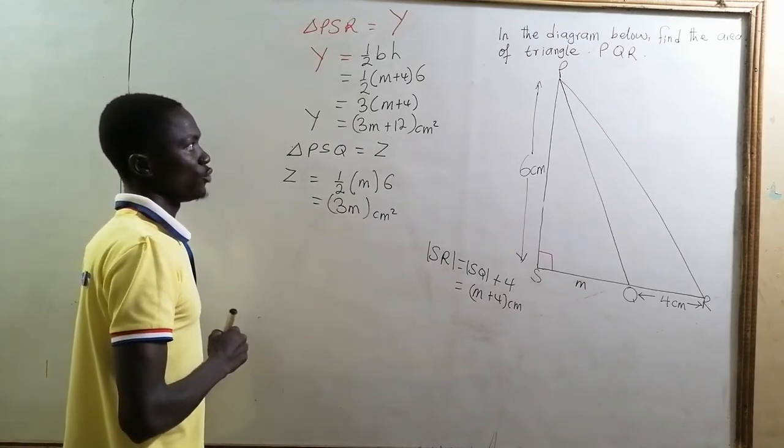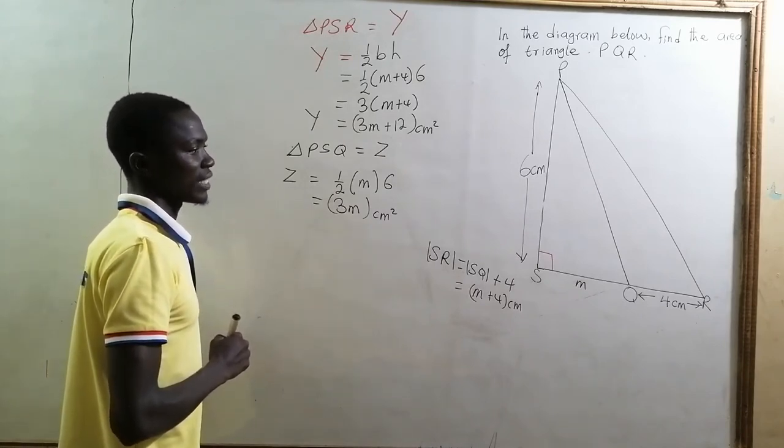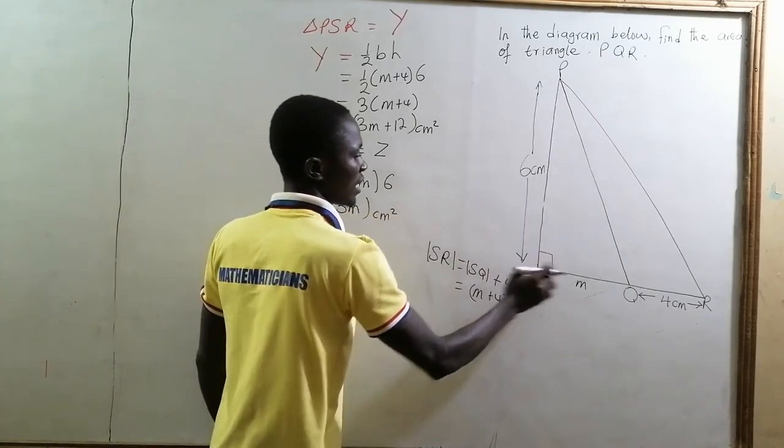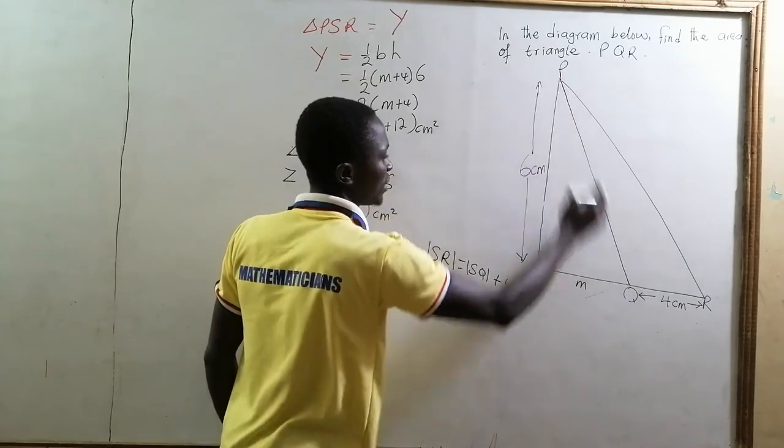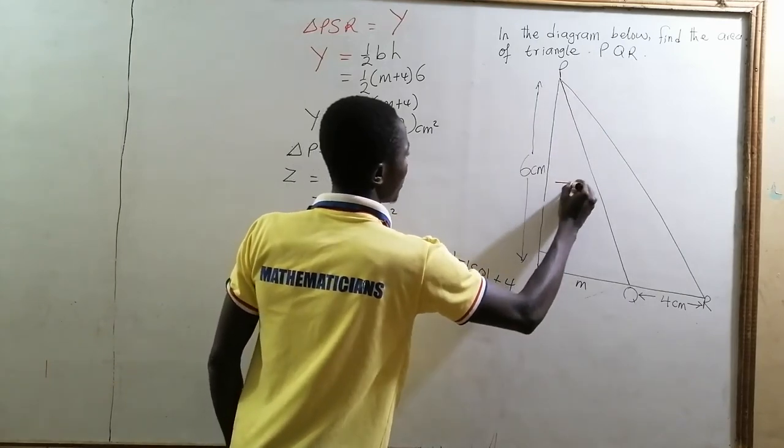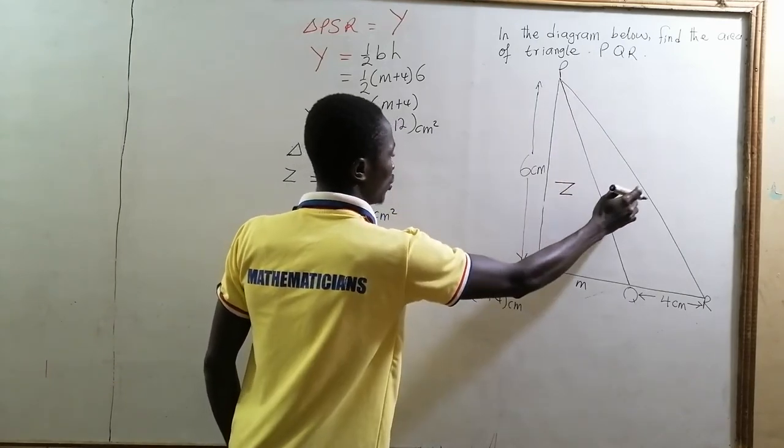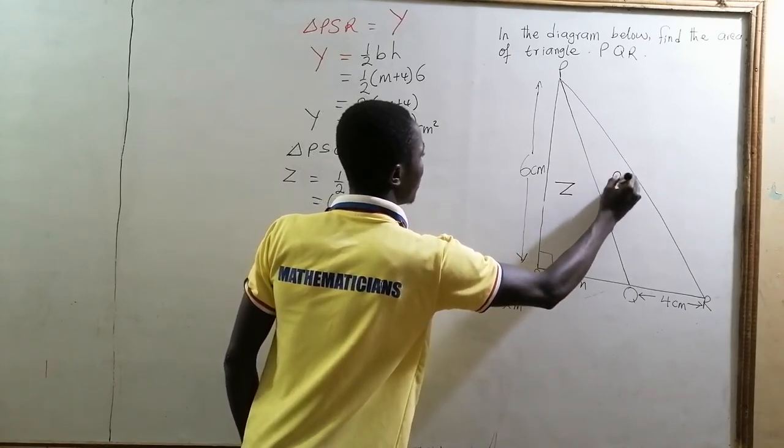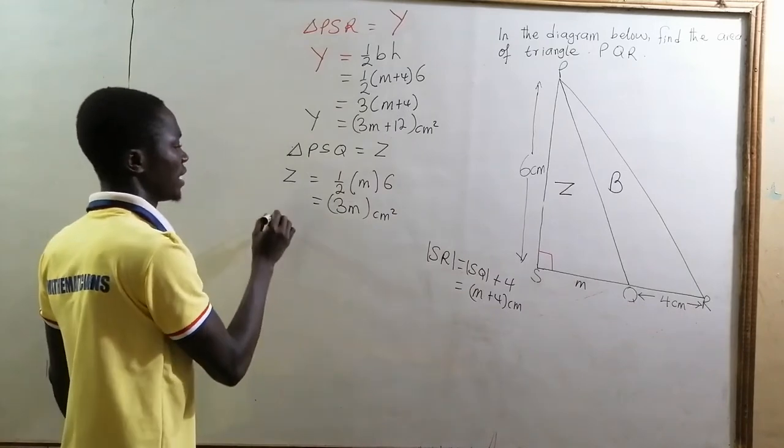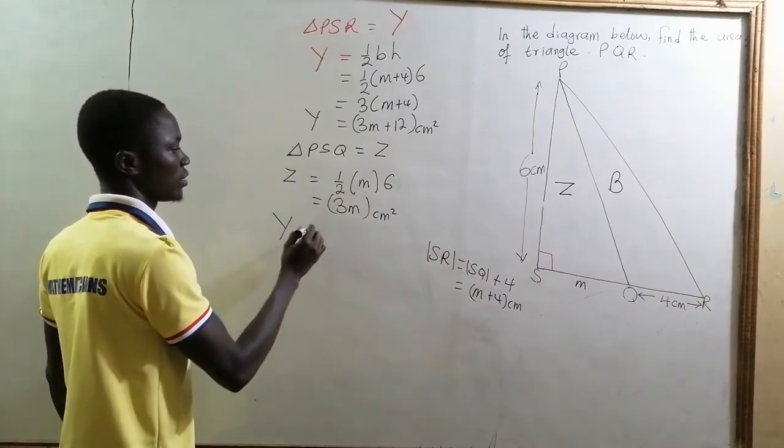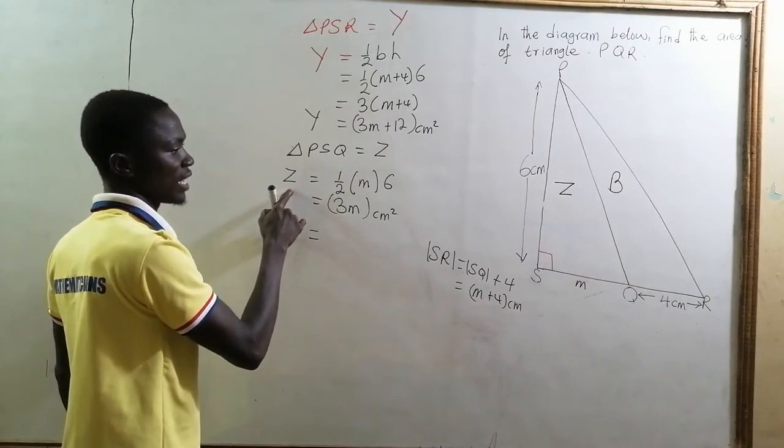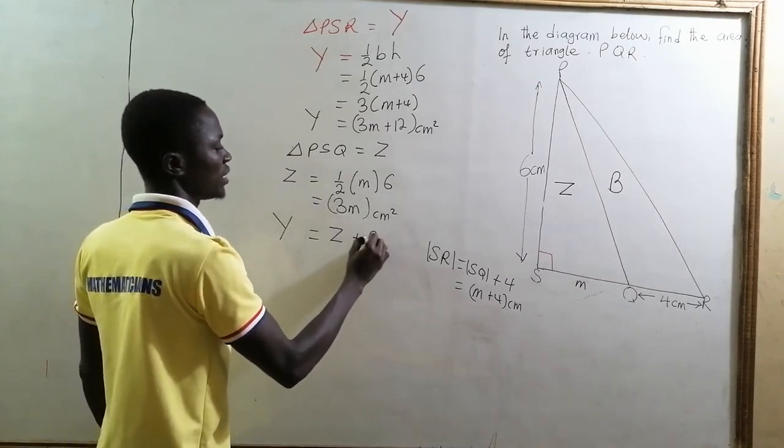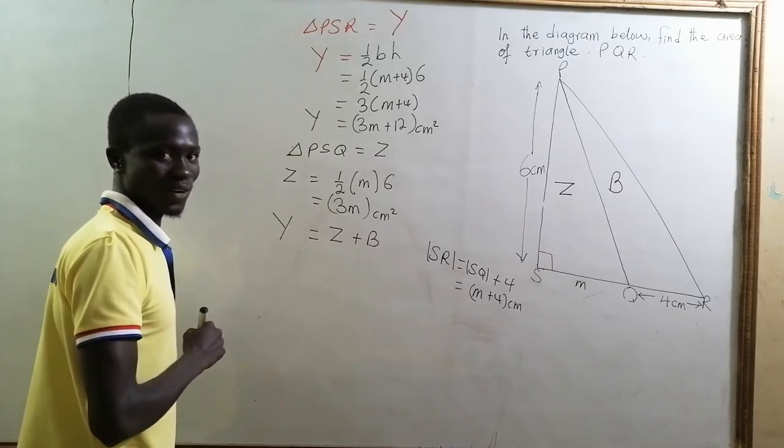Now if you consider triangle PSR, it is the combination of triangle PSQ and triangle PQR. So if we denote this area by capital P, we are going to have the area of triangle PSR, that is Y, to be equal to the area of triangle PSQ plus the area of triangle PQR.